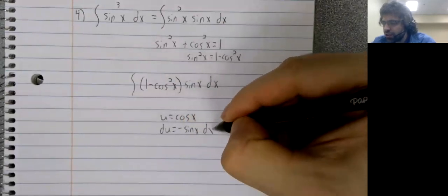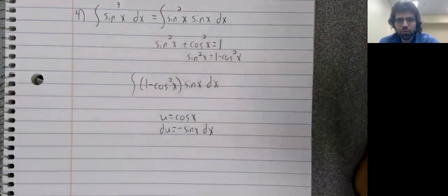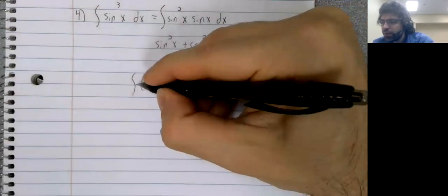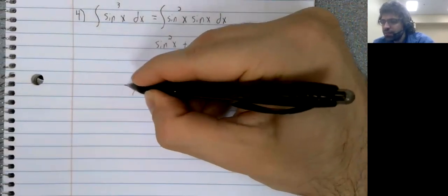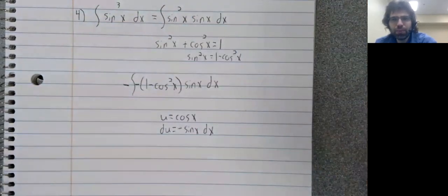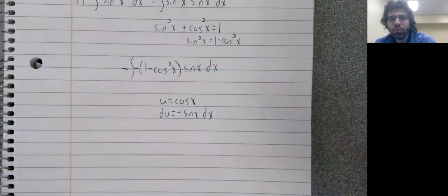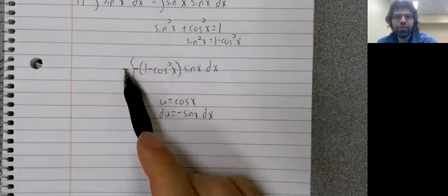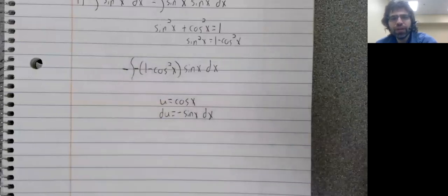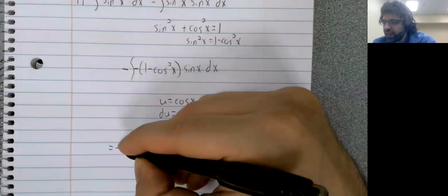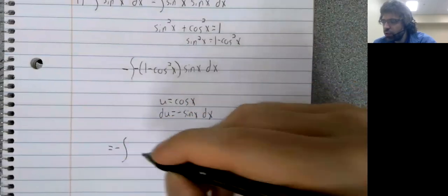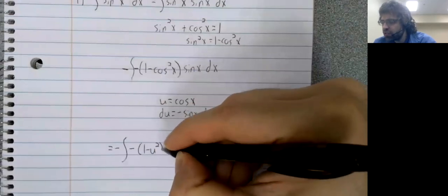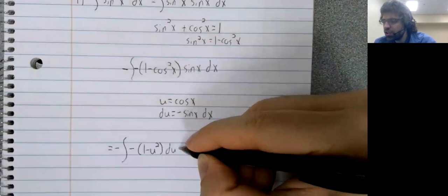But the same principle. For example, we don't have a negative sign. We can put it in as long as we put in a second one to cancel it out. Negative signs can be pulled in or pulled out of integrals.